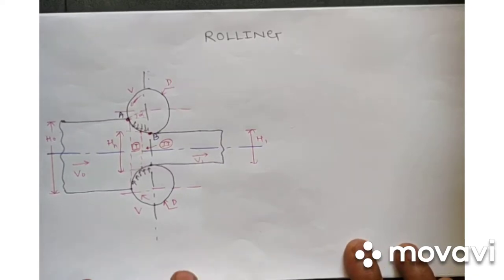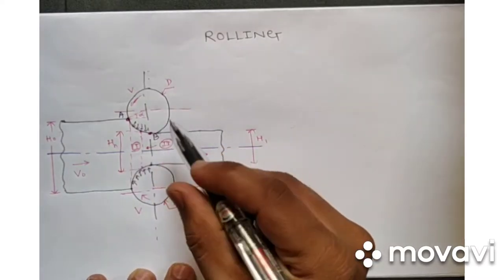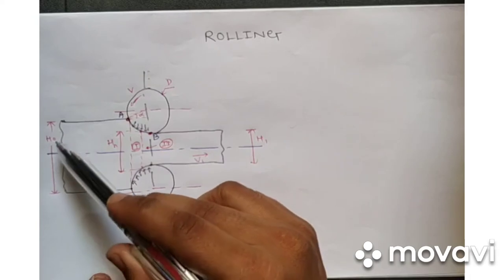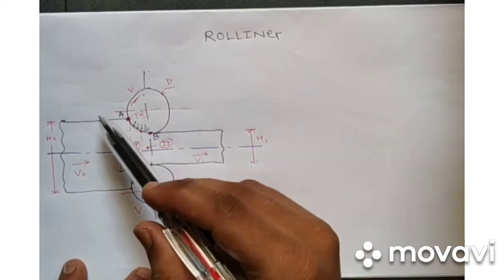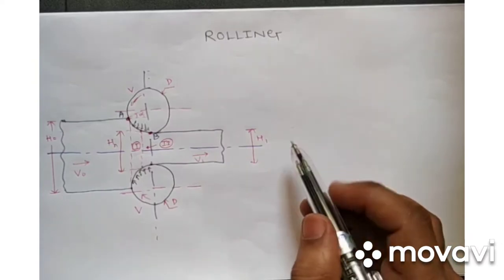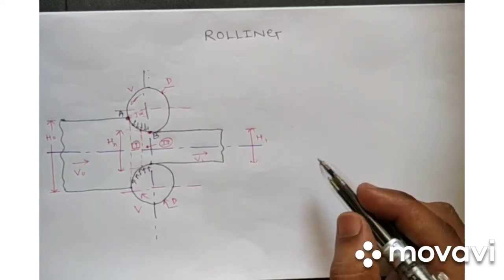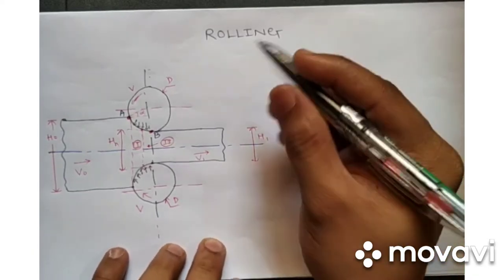Hello and welcome to our channel Indromech. We have started discussing metal forming processes, and today we are going to discuss the rolling process, in which a material sheet is compressed between two rotating rollers such that its thickness is reduced. H0 is the original height of the strip and H1 is the final thickness of the strip.